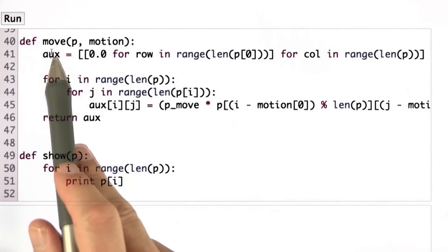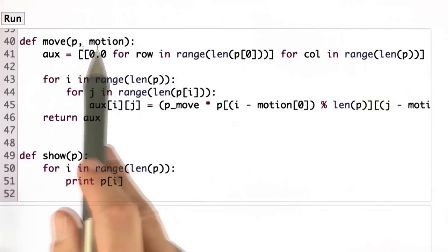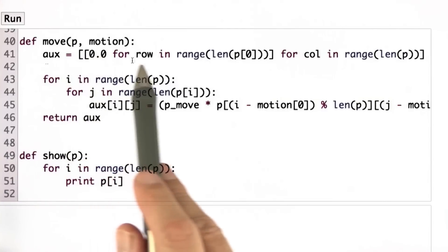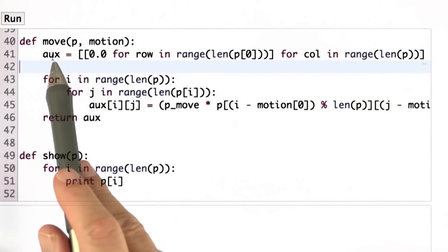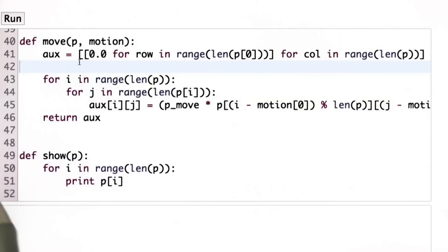The move command takes as an input a distribution and a motion vector. It constructs the next distribution just like before as aux variable and sets it to 0. And now I go through each grid cell. And for each cell, I collect possible cells that the robot might have come from.